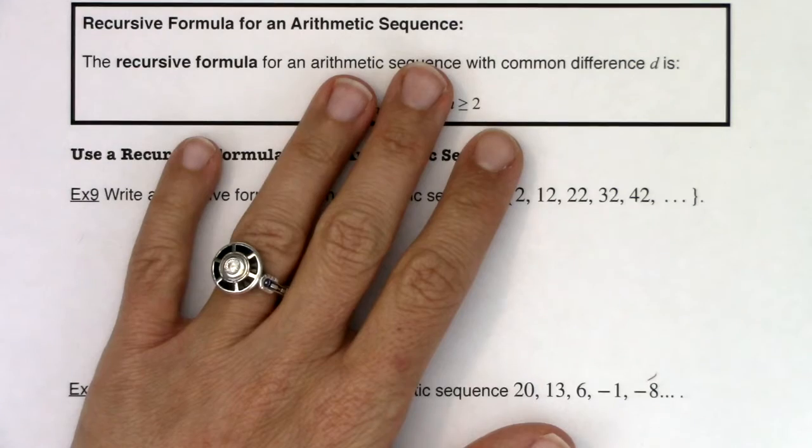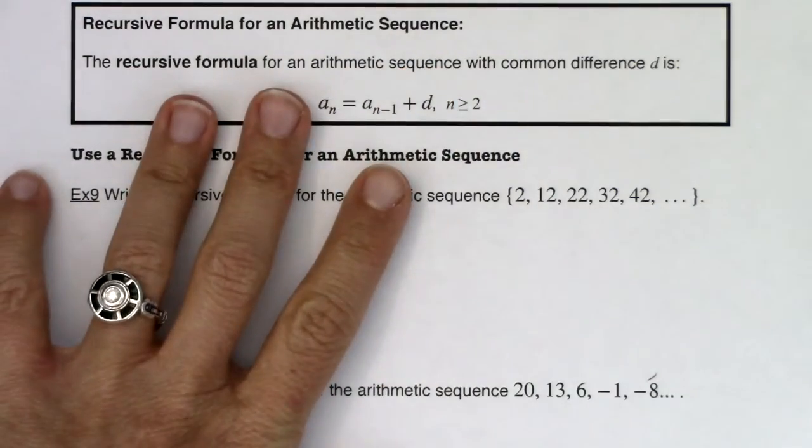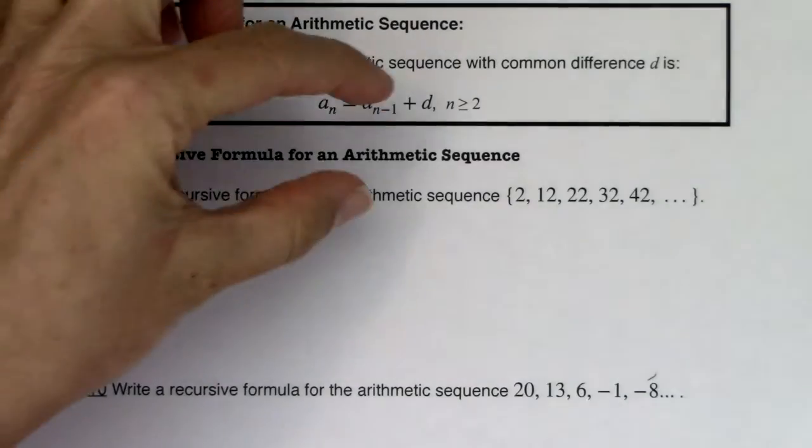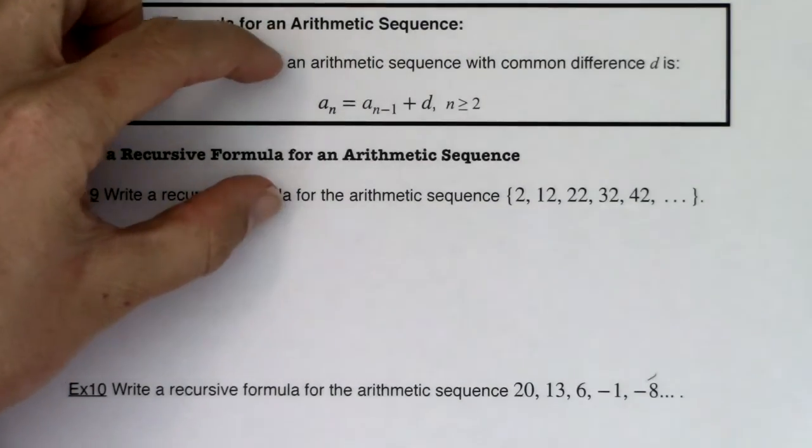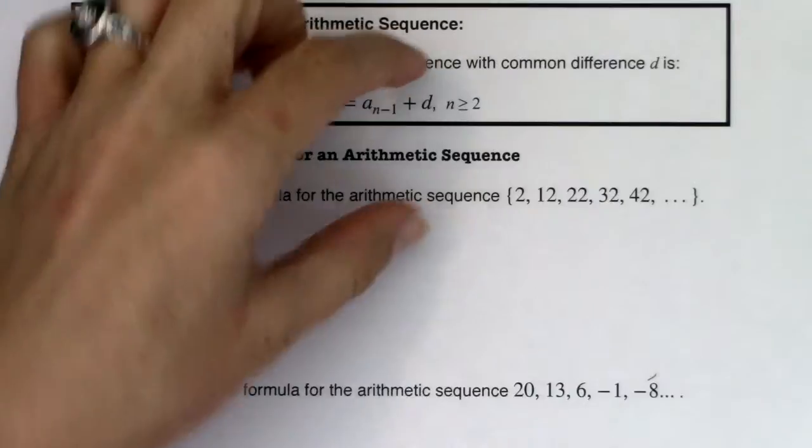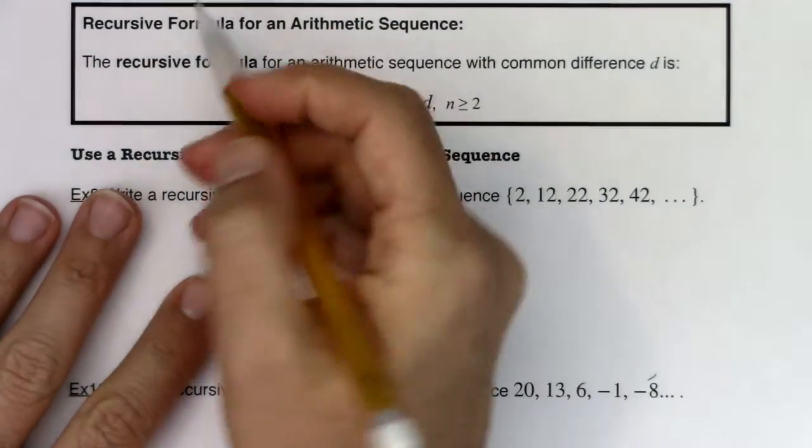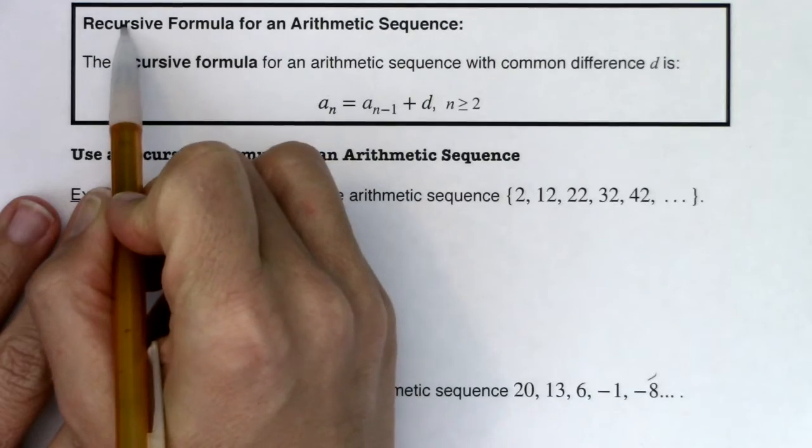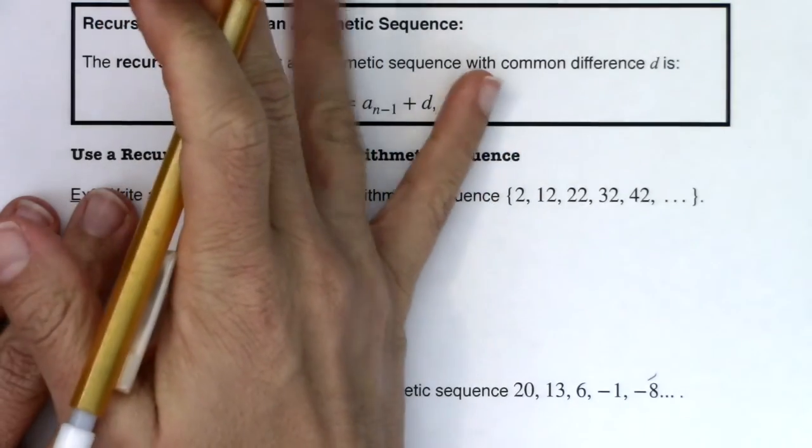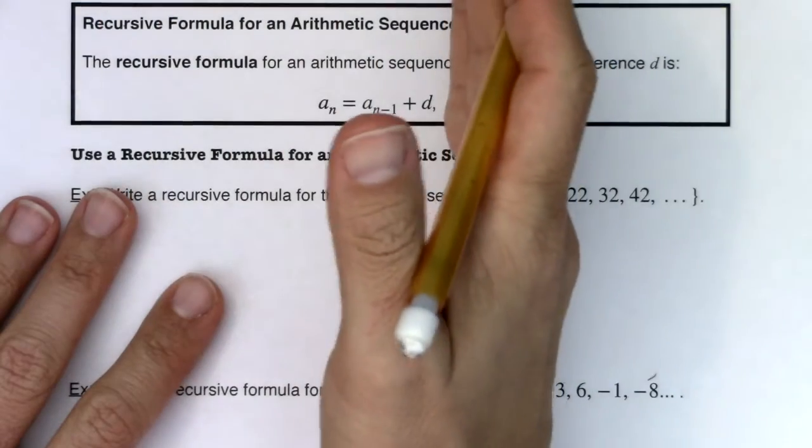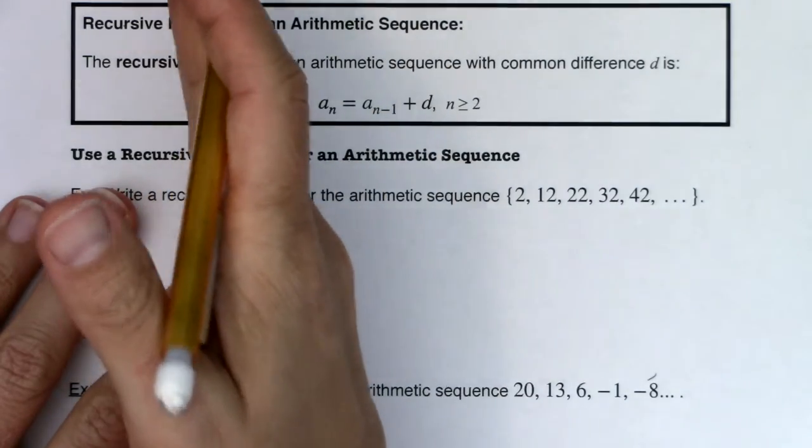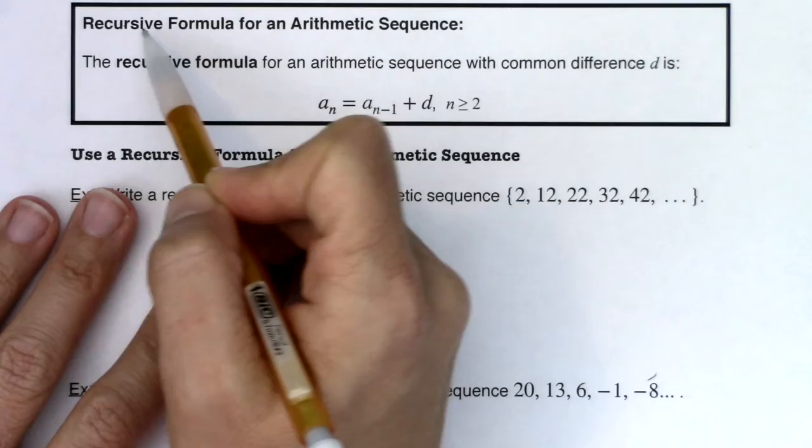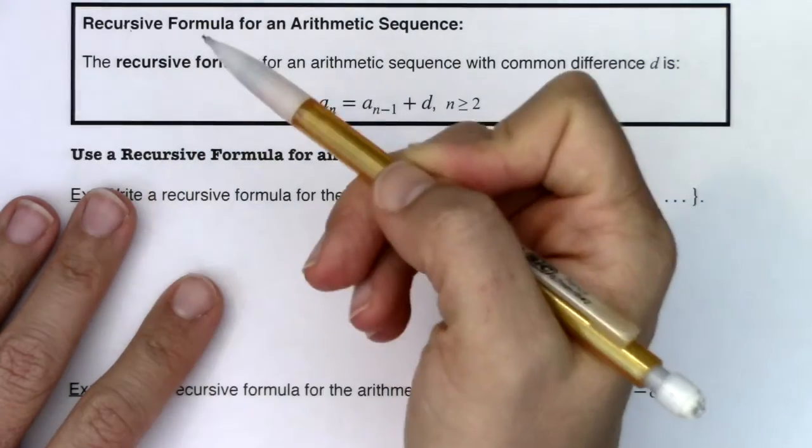This is where we're going to look at recursive formulas for an arithmetic sequence. If you remember from the last section, a recursive sequence is still a sequence, it's a list of numbers where each term is defined as an expression involving previous terms. Which means when we were doing recursive formulas in 9.1, we needed our first term, or potentially first few terms, and then every term after that was defined in terms of the previous term. So we're going to use the same idea here. We're going to have a starting term and then a recursive formula.